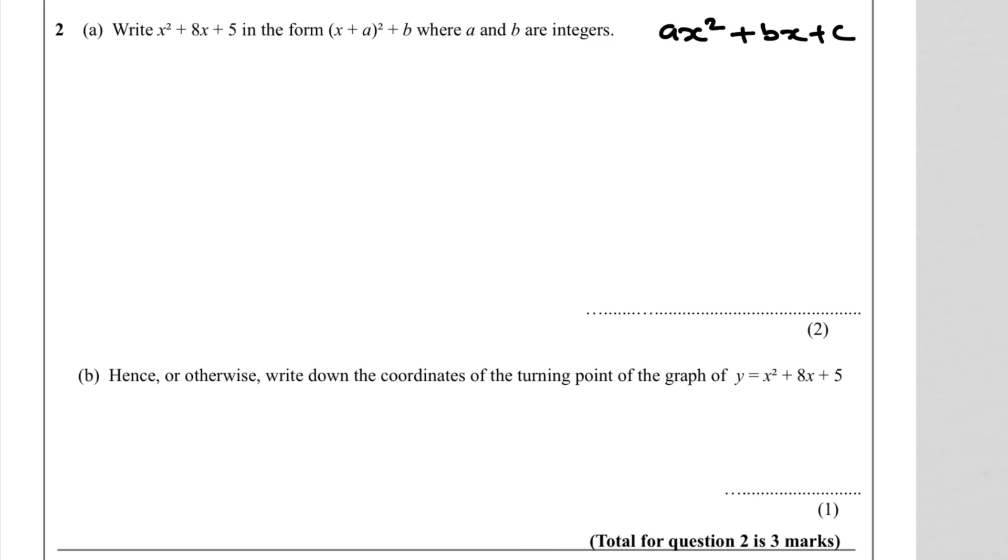This is completing the square ready since a equals 1. Transform x² to x, bring the plus sign down, divide by 2, and square it. Then take away the square of what's inside, which is (8÷2)².